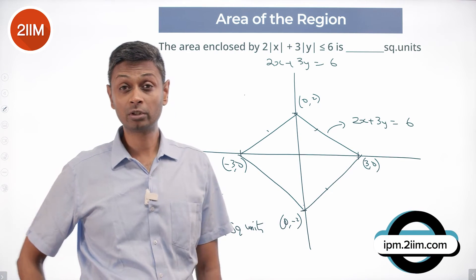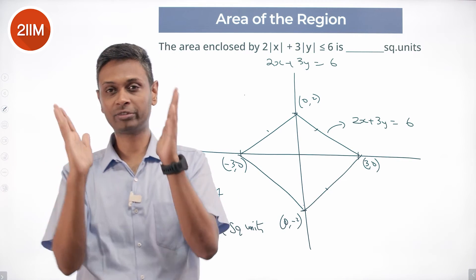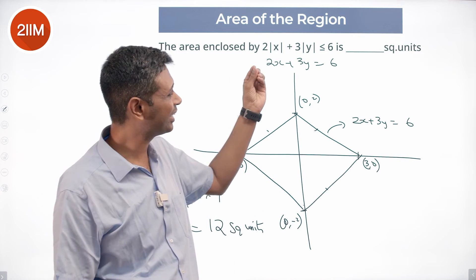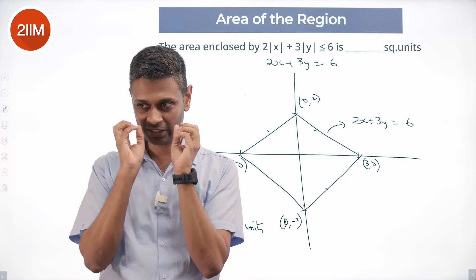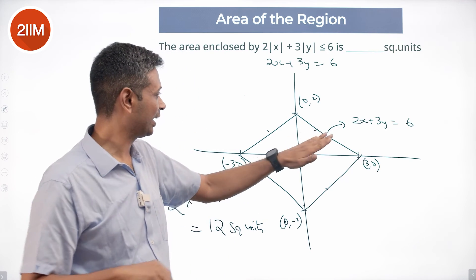Beautiful question to drive home the idea of thinking about modulus. So if mod x and mod y is involved, draw in the first quadrant, nice and simple. Take that shape, then trade it, it will be mirror image here. It will be symmetric all over the board.